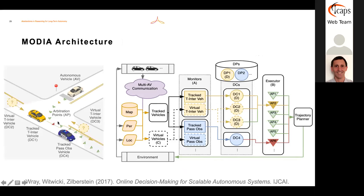The overall control flow looks like this. We have arbitration points along our route. We have two detected vehicles—two classes of problems, two different POMDPs: one for passing an obstacle and one for a T-intersection vehicle. We also instantiate virtual vehicles just out of perception range, with a belief over their existence. Monitors take raw perception and convert them into observations or beliefs. The decision components are instantiated from a database of solutions and policies, each recommending an action to the same arbitration point. The executor resolves these action recommendations and feeds the result to something like a trajectory planner.